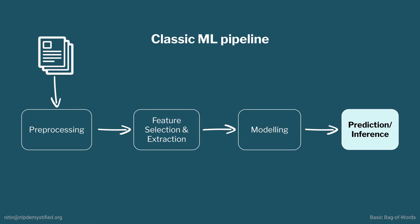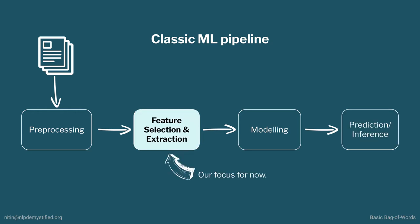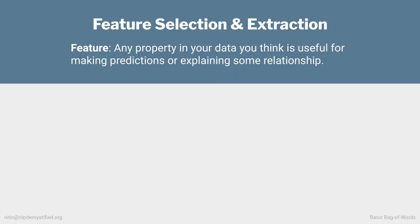We'll learn more about modeling later in the course. I call this pipeline classic because the pipeline in deep learning looks different, as we'll see when we discuss it. For now, let's focus on feature selection and extraction. A feature, put simply, is any property in our data that we think is useful for making our desired prediction or explaining some relationship.